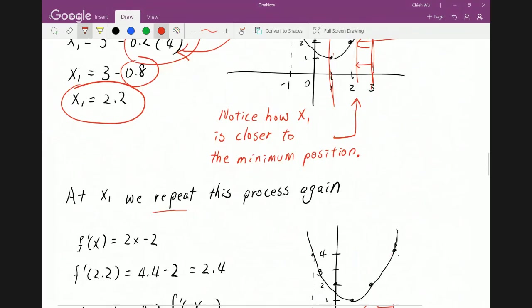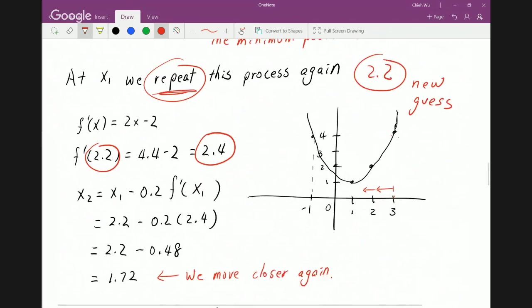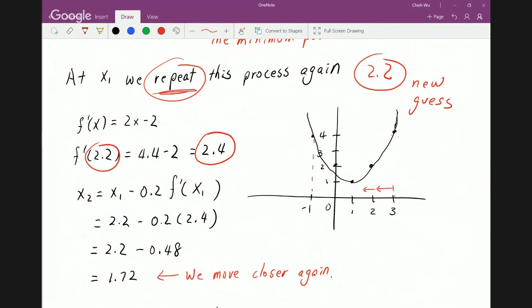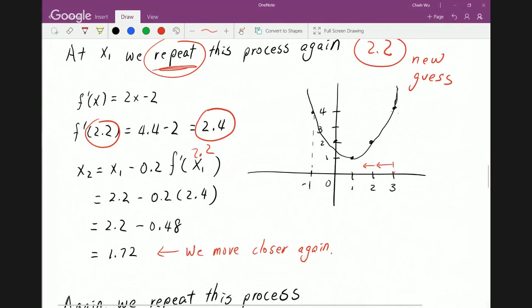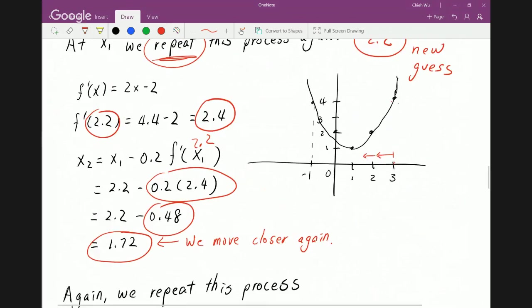Now we repeat this process again. But this time, we use 2.2 as the new guess. Now with 2.2, we plug 2.2 into the derivative and we get 2.4. So our new guess is 2.2 now and we plug 2.2 here, which gives us 2.4. Now, 0.2 times 2.4 equals 0.48. And again, we have moved closer, 1.72.